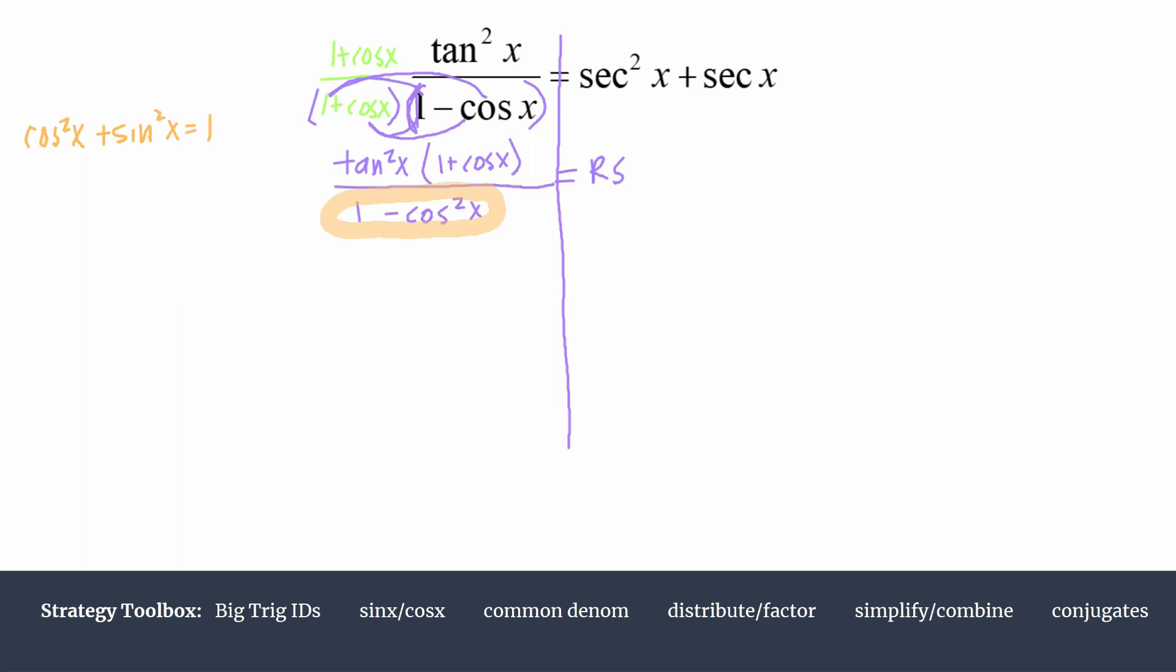If you rearrange that, you can see that sine squared is actually a replacement you can make for 1 minus cosine squared. So we'll replace our denominator of 1 minus cosine squared with a single term of sine squared.